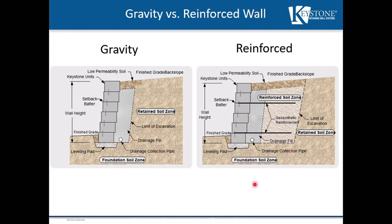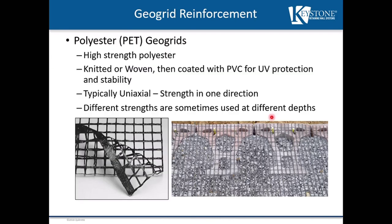Once we exceed what we can do with the gravity wall, we're going to do a reinforced wall. For a reinforced wall, we're going to use products that are 6 to 8 inches tall and a minimum of 10 inches deep — typically 12 inches deep. We're not going to use any landscaping product for a reinforced wall. The reinforced wall consists of a polyester geogrid and the block facing. The polyester geogrid is a high-strength material specifically designed for reinforcing soil. It can be a knitted product or a woven product.